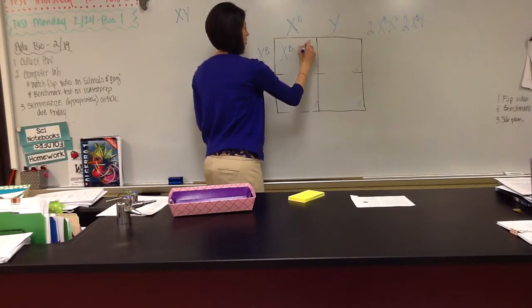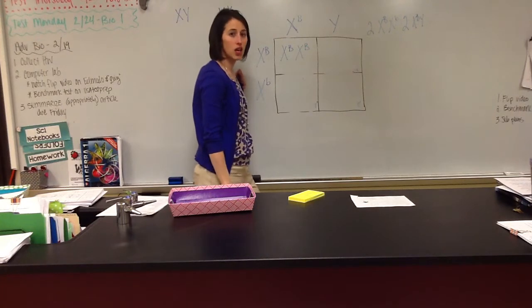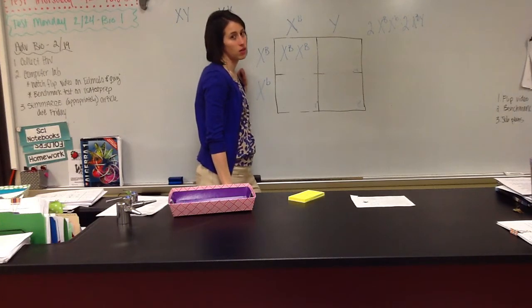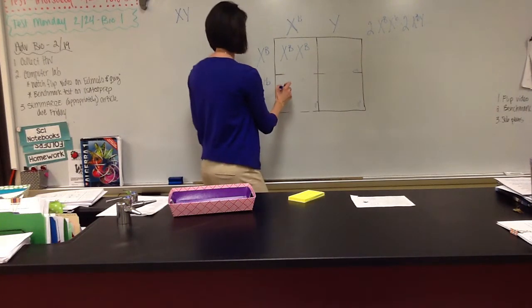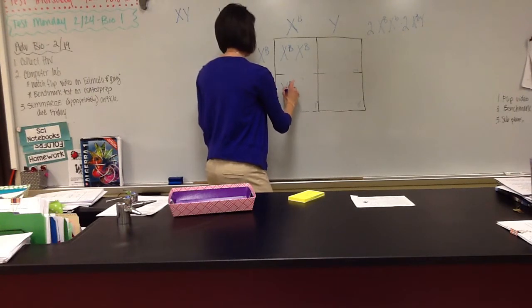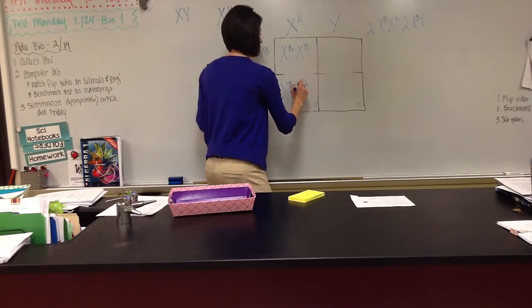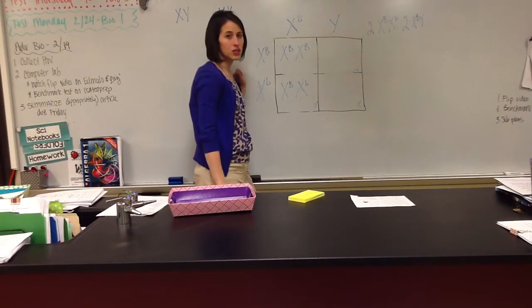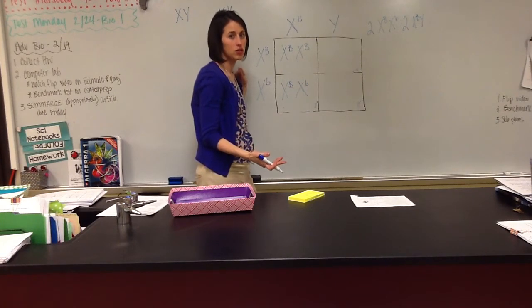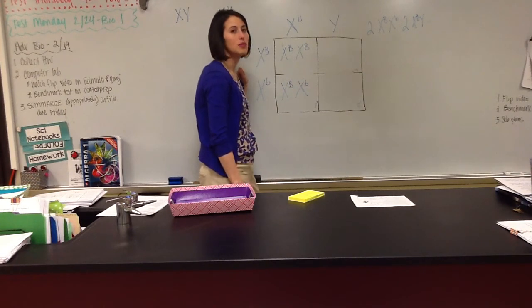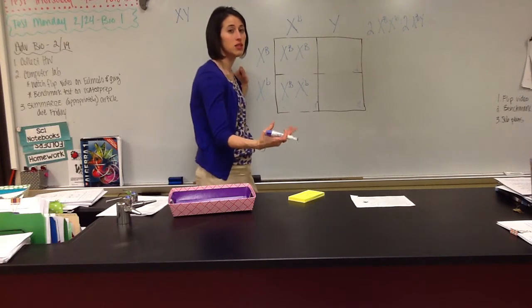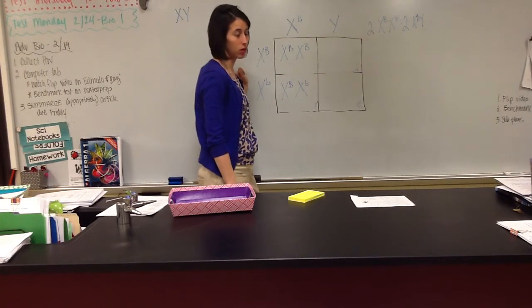So this Punnett square, this would be a female that's unaffected. So she does not have the colorblind trait. This one is heterozygous, so we say that she's a carrier. So she's not going to be colorblind, but she's going to have the ability to pass on that colorblind trait.